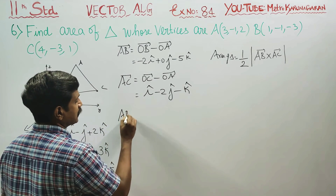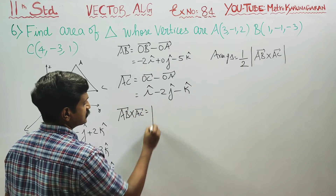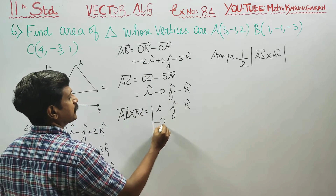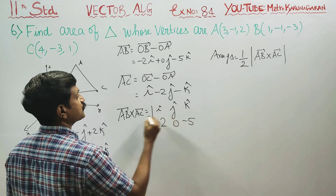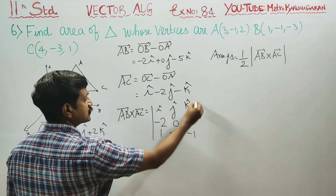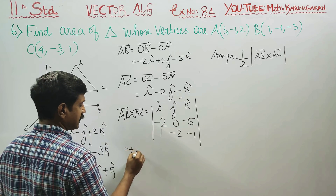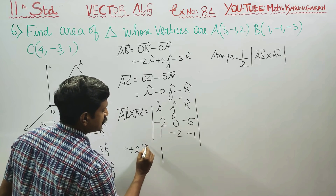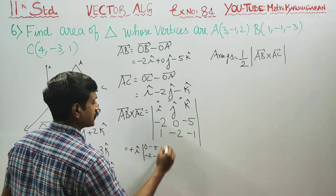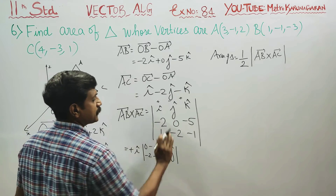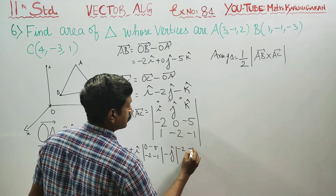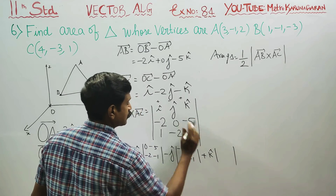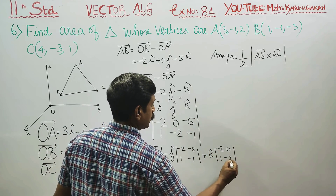I want AB vector cross AC vector. Cross product means setting up the determinant with i vector, j vector, k vector. AB components are minus 2, 0, minus 5. AC components are 1, minus 2, minus 1. Signs alternate plus, minus, plus. i cap into the minor of its column: (0, minus 5; minus 2, minus 1). Minus j vector into the minor: (minus 2, minus 5; 1, minus 1). Plus k cap into the minor: (minus 2, 0; 1, minus 2).